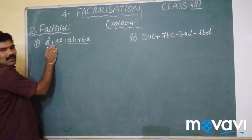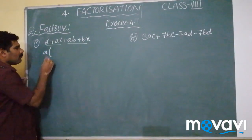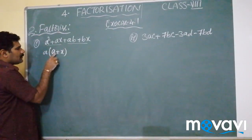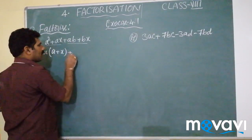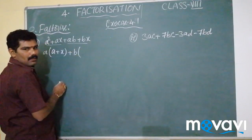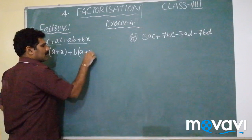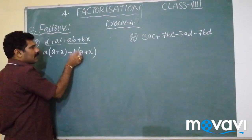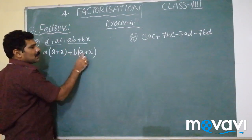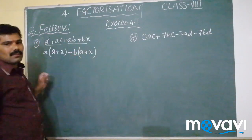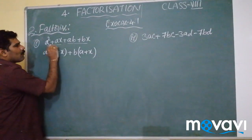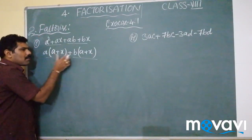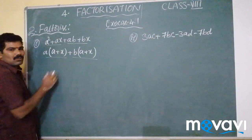In these two terms, A is common — I will take A outside: A into A square plus AX. Same like that, B is common here — I will take B outside: B into AB plus BX. Now see, these four terms were reduced to two terms, and in these two terms, A plus X is the factor which is common to both terms.